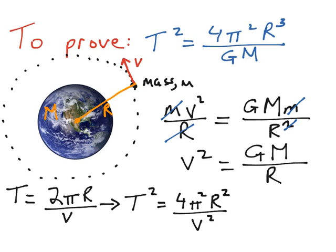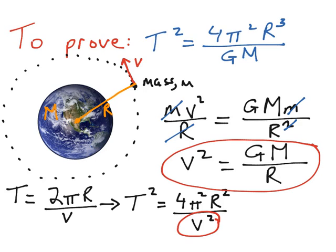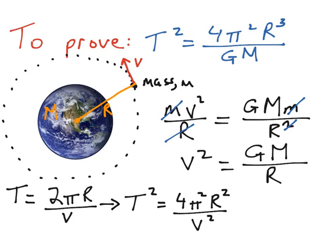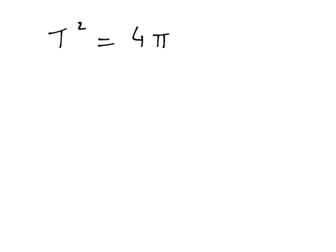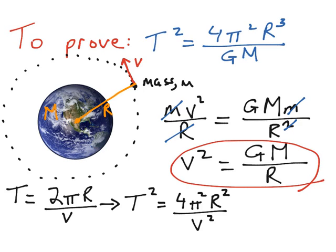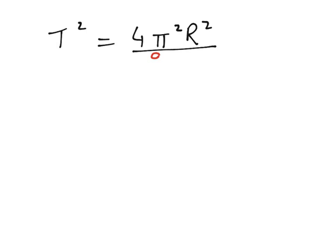At this point we substitute the v squared from our earlier result into this formula. The denominator, instead of v squared, becomes GM over R. So we substitute that into our formula for the period squared. Our new formula still has T squared on the left-hand side, and on the top we have 4π squared and R squared. In the denominator, instead of v squared, we use GM over R.